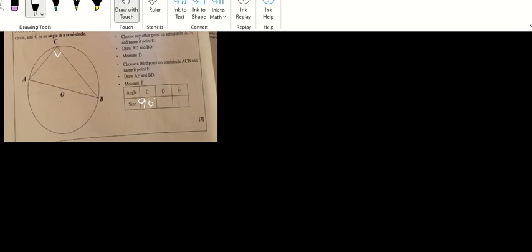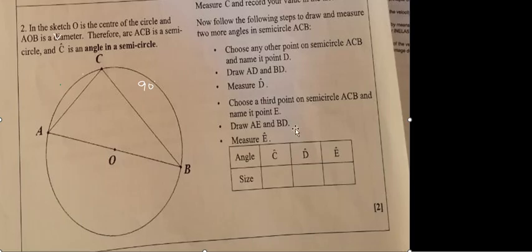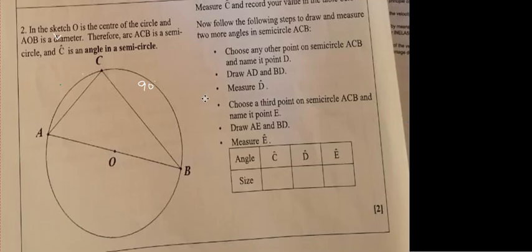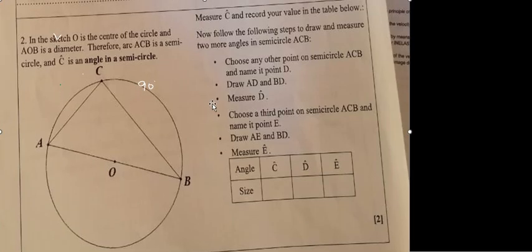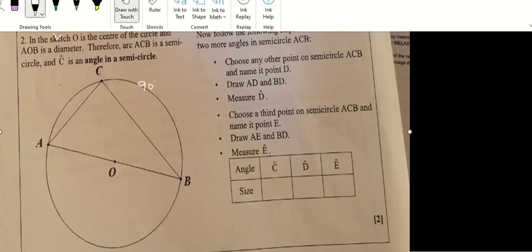It has to be like that regardless. Now follow the following steps: draw and measure two or more angles in the semicircle. Choose any other points on the semicircle. I think I need to enlarge this a little bit.